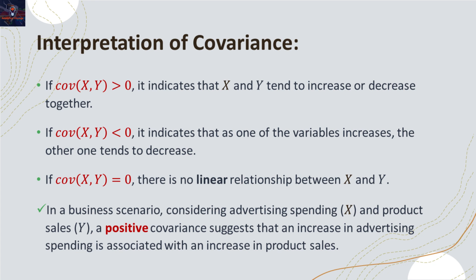Positive covariance shows that increase in the amount of advertising budget is associated with increase in the product sales. Positive covariance can also explain the situation where decrease in the advertising budget is associated with decrease in product sales.